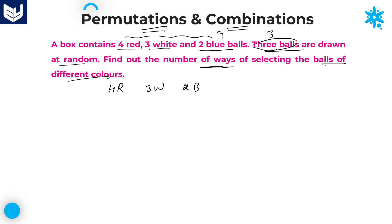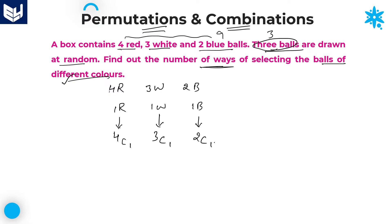The condition is that all three balls are of different colors. It means we need to select one red ball, one white ball, and one blue ball. Total we have four red balls, out of which we select one — possible in C(4,1) = 4 ways. Similarly, three white balls selecting one gives C(3,1) = 3 ways. Two blue balls selecting one gives C(2,1) = 2 ways.